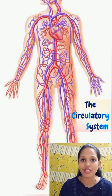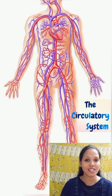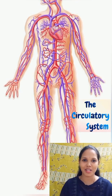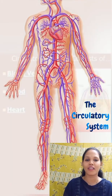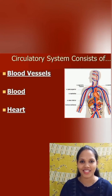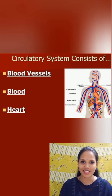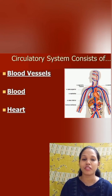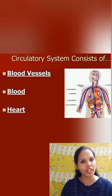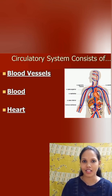Today we are going to discuss about the most amazing system in the human body, the circulatory system. The circulatory system comprises of the blood vessels, blood flowing through these vessels, and the heart.